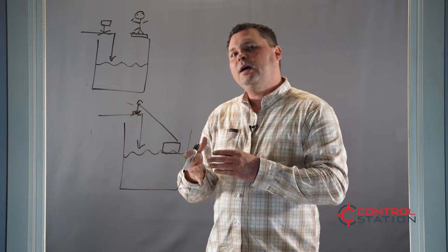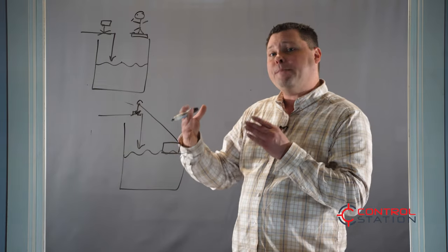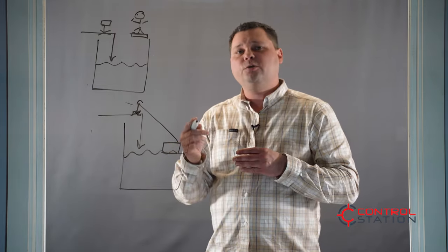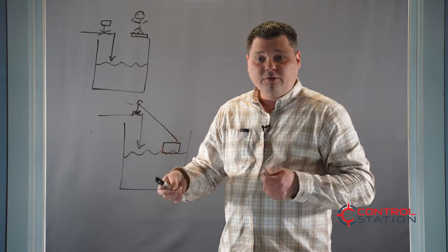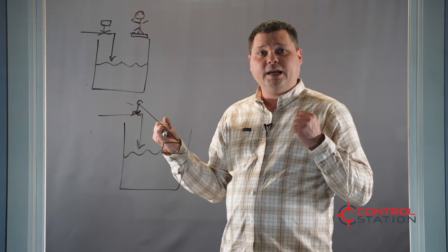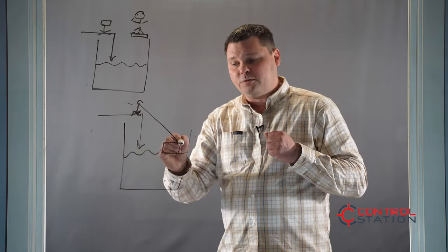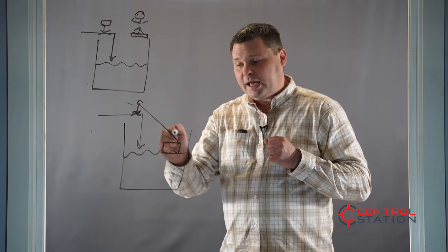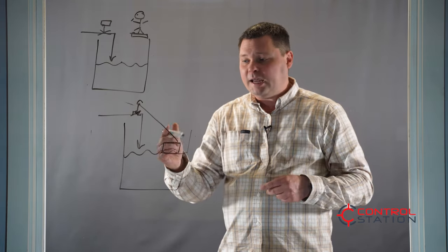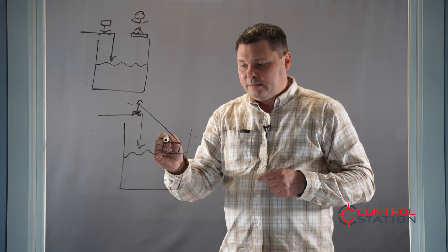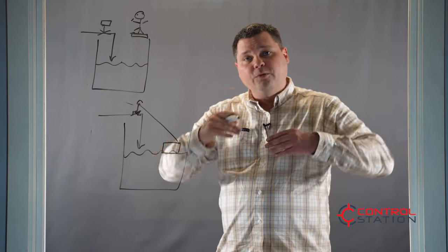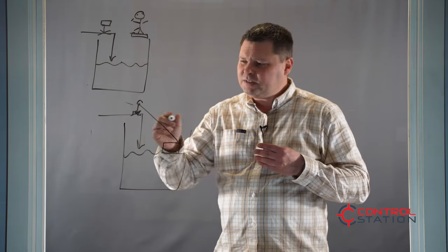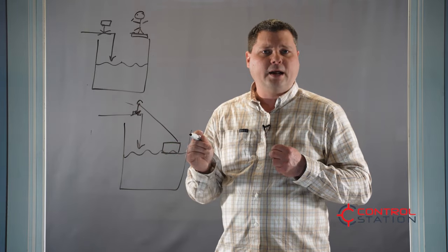This would be a very simple type of automatic control — what you would use, for instance, in the back of your toilet. If you've ever opened up the tank behind your toilet, you see a float system with an arm attached to a valve, and you can control the liquid level by this float moving up and down and opening and closing the valve.